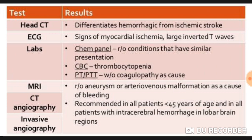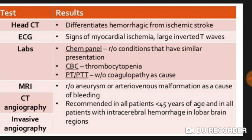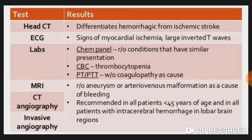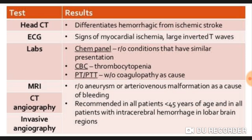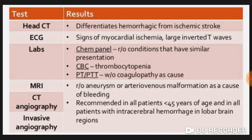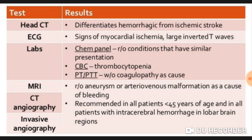To differentiate stroke types, I ordered a head CT when she visited my hospital and found she is suffering from hemorrhagic stroke, not ischemic stroke. ECG can be done to identify MI with large inverted T waves, but her ECG is normal. CBC showed thrombocytopenia; PT and PTT coagulopathy can be causes, but these are normal for her. MRI can reveal aneurysm or arteriovenous malformation as a cause of bleed.